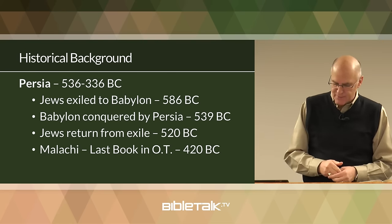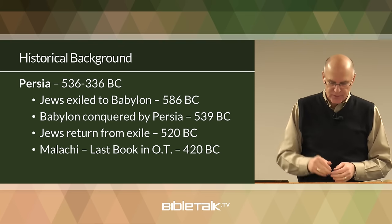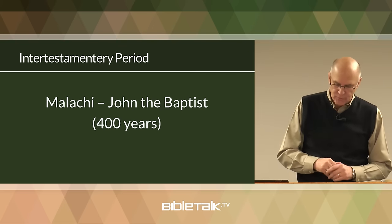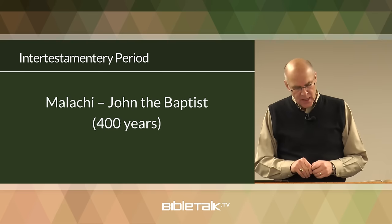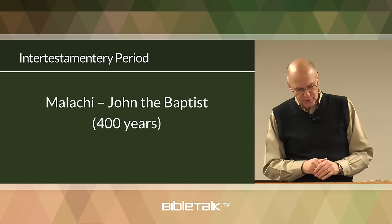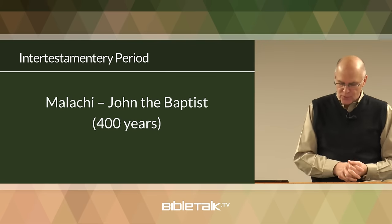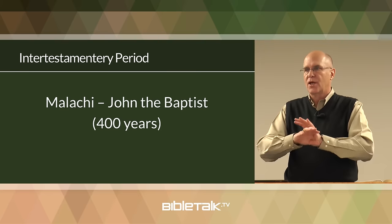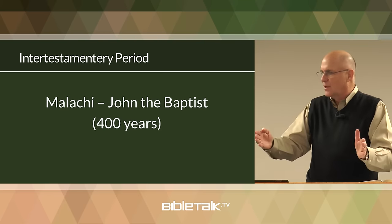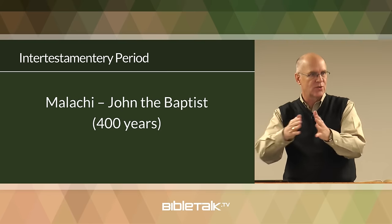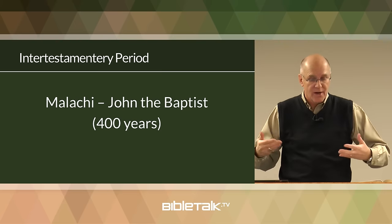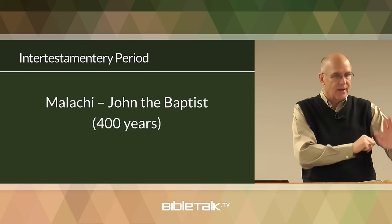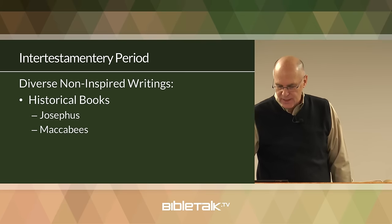The final book of the Old Testament is Malachi, written at about this time. After Malachi, we have what's called the intertestamentary period — lasting about 400 years — where there are no inspired books produced, but a lot of historical and diverse religious writings. There were no prophets, no inspired books written from the period of Malachi to John the Baptist, which is about 400 years. However, a lot of material was produced, and it influenced the thinking of the Jews in the first century.